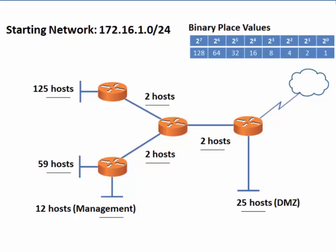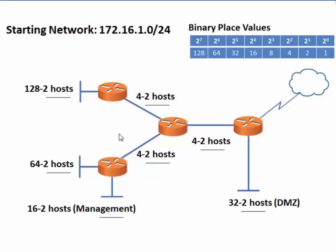When creating subnets, we have to remember that the sizes of subnets we can create are constrained by the binary place values. The binary place values, if you look at 8 bits, are 128, 64, 32, 16, 8, 4, 2, and 1. We cannot create a subnet specifically for 125 hosts, but we can create a subnet for 128 hosts, two of which are not usable, so it would be effectively 126 hosts. In other words, we can create a subnet for 128 hosts, which meets the requirement of 125 hosts.